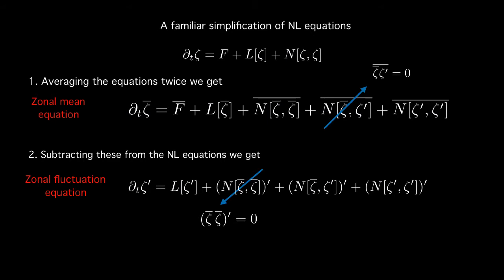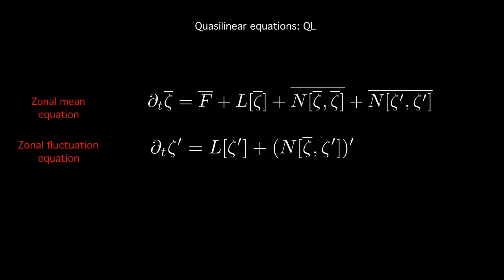We reduce these equations further by adopting an approach taken by Srinivasan and Young. I will look at this eddy eddy non-linear term which is a product of two fluctuations giving rise to fluctuations. Eliminating these we come up with the quasi-linear equations. So these are equations in the zonal mean and fluctuation.